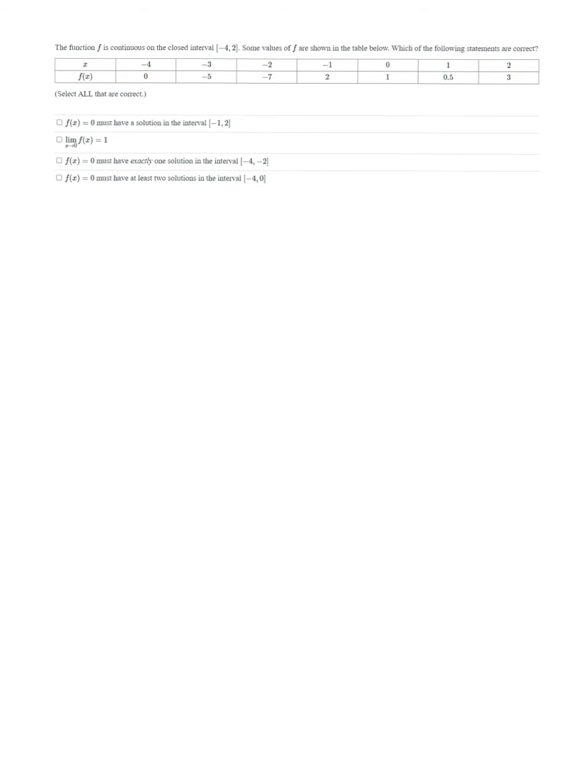So, in this problem, we are told that f is a continuous function, and it's defined on this entire interval from negative 4 to 2. They say that some of the values for f are shown in the table below, emphasis on some. Which of the following statements is correct, or select all that are true? The first statement says that f of x equals 0 has a solution on the interval negative 1 to 2.